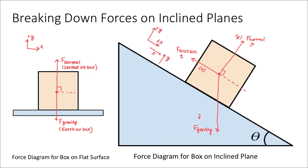Now the only force at an angle is the gravitational force. So I'm going to draw my force diagram given this new tilted coordinate system by drawing the components of the force of gravity. I'll begin by breaking the force of gravity into a y component pointing straight down, and an x component as well. I'll call this the force of gravity in the y direction, and this one the force of gravity in the x direction — where x is parallel to the hill and y is perpendicular to the hill.